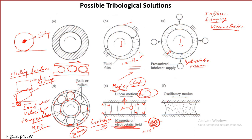The next tribological solution is oscillatory motion, also known as suspension bushings or auto suspension bushings. Here the range of motion is quite small and oscillatory, so we do not have a large movement. Some elastic deformation can be good enough — within the elastic range, these two surfaces can oscillate, providing a kind of suspension or lubrication. The range of motion is quite limited.